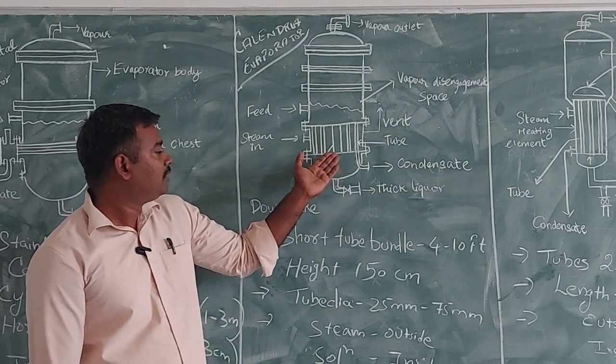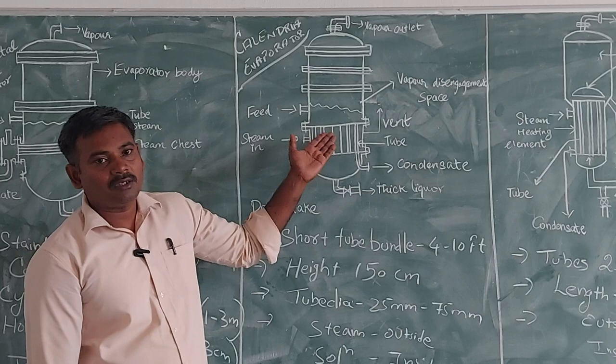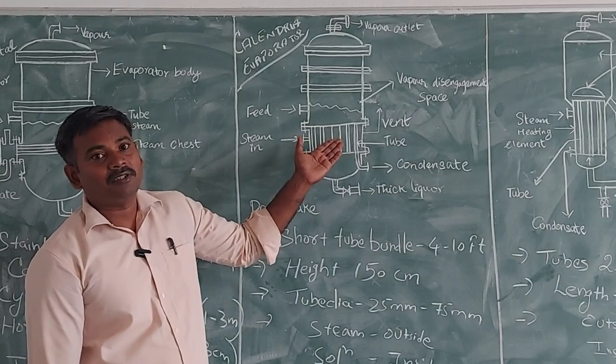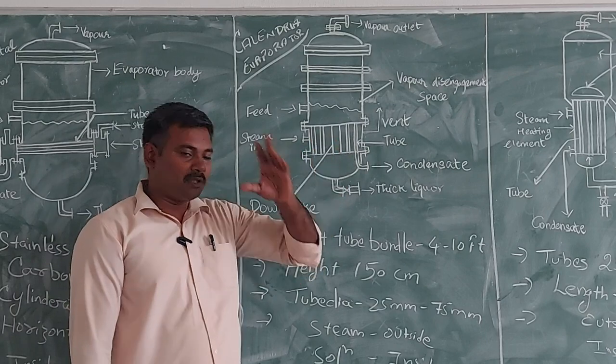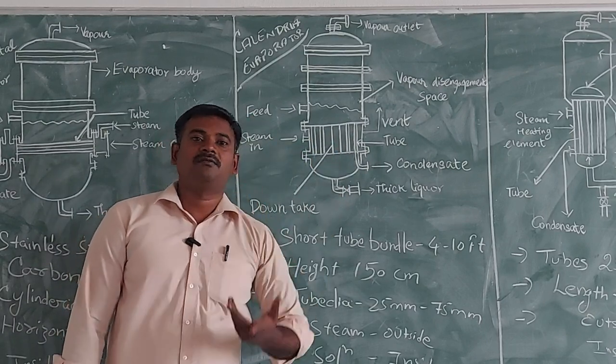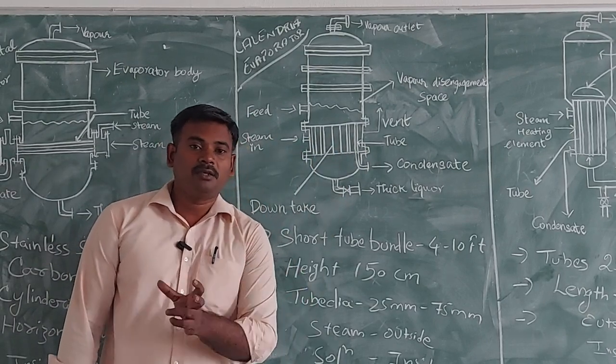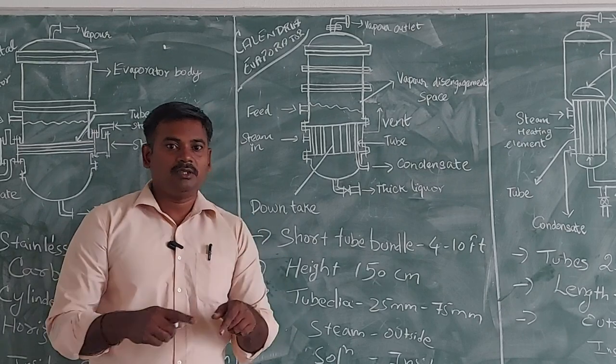So this is the work of your downtake. And this will be the 40 to 100 percentage of cross sectional area of your feed tank. So this downtake, the downtake of the construction will be like 40 to 100 percentage of your cross sectional area.